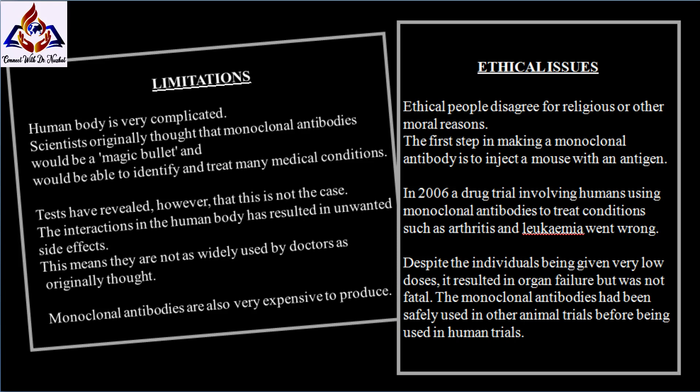There are also some ethical issues with monoclonal antibodies. People disagree for religious or other moral reasons. The first step in making a monoclonal antibody is to inject a mouse with an antigen. After it has produced antibodies, a small operation removes spleen cells, which then continue to make the antibodies. Some people disagree with this use of animals to produce monoclonal antibodies.